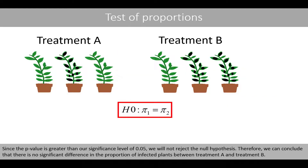Since the p-value of 0.34 is greater than our significance level of 0.05, we will not reject the null hypothesis. Therefore, we conclude that there is no significant difference in the proportion of infected plants between treatment A and treatment B.